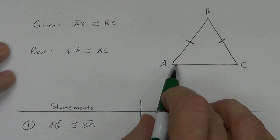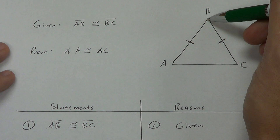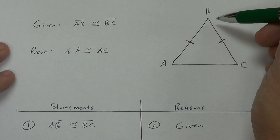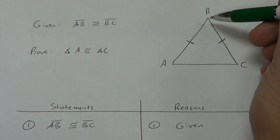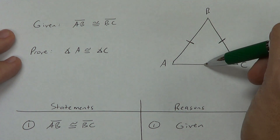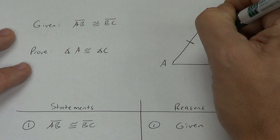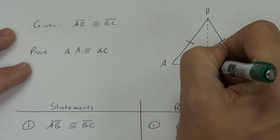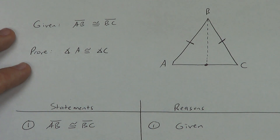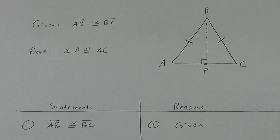If I have segment AC and a point B that is not on this line, how many lines can I draw through this point? An infinite amount. How many of them are perpendicular to AC? The answer is 1. So I'm going to draw that as a dotted line and call the intersection point P. I know that BP has to exist perpendicular to AC. We could figure out exactly where that happens using a compass, but I know it has to exist.